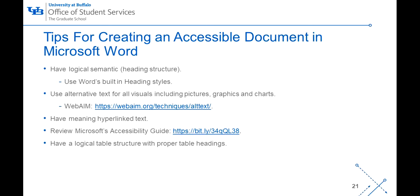The University at Buffalo is committed to ensuring equal access to information presented online as per UB's web accessibility policy. As part of this commitment, university web content must be accessible to everybody, including individuals with physical, sensory, or cognitive impairments, with or without the use of assistive technology. Here are some examples for creating an accessible document in Microsoft Word. First, have a logical semantic or heading structure — this means using Word's built-in heading styles to numerically move between the different heading levels. Second, use alternative text for all visuals, including pictures, graphs, and charts.